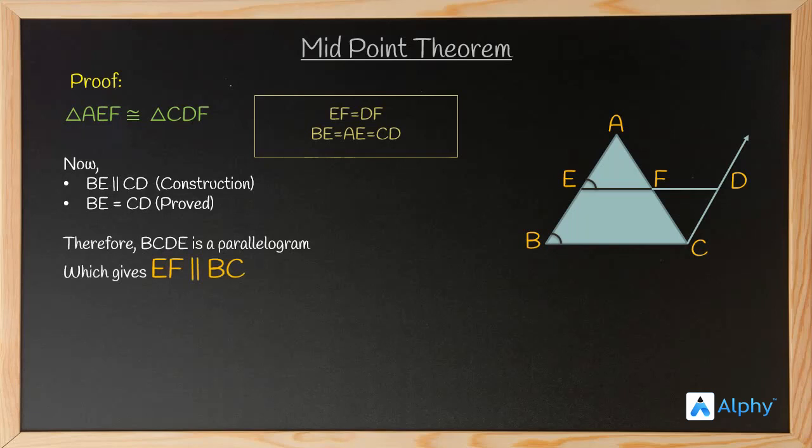Also I told you I will be proving how EF is equal to half the length of BC. So if you see, ED is equal to BC because obviously opposite sides of a parallelogram are equal to each other. Also ED is equal to EF plus DF. If you follow the question, the line ED is equal to EF plus DF.